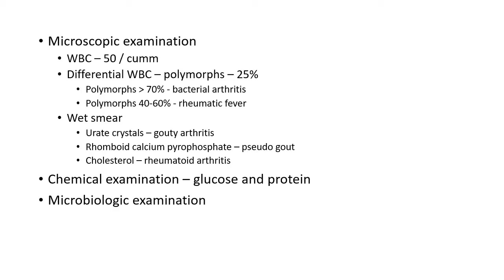On microscopic examination, the normal WBC count of synovial fluid is 50 cells per cubic millimeter. Differential WBC count is taken from a smear of the sediment — normal synovial fluid contains about 25% polymorphs. More than 70% polymorphs indicates bacterial arthritis; 40–60% is seen in rheumatic fever, gout, tubercular arthritis, and rheumatoid arthritis. Wet smear examination reveals crystals: urate crystals in gouty arthritis, rhomboid calcium pyrophosphate crystals in pseudogout, and cholesterol crystals in rheumatoid arthritis. Chemical and microbiological examinations can also be done.